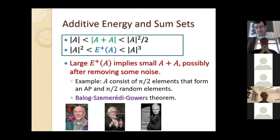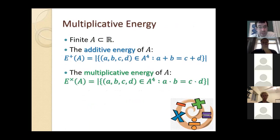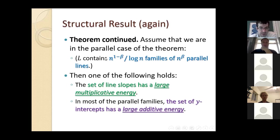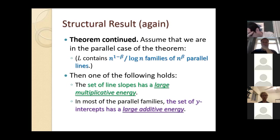Second part of our result: assuming we're in the parallel case (many families of many parallel lines), then one of the following holds — either the set of line slopes has large multiplicative energy, or for many of the families, the set of y-intercepts has large additive energy. So to have n^(4/3) incidences with a Cartesian product, either the slopes have multiplicative structure or the y-intercepts within each family have additive structure.